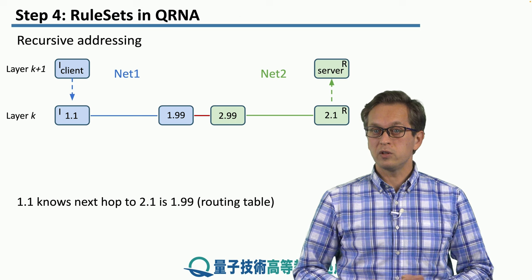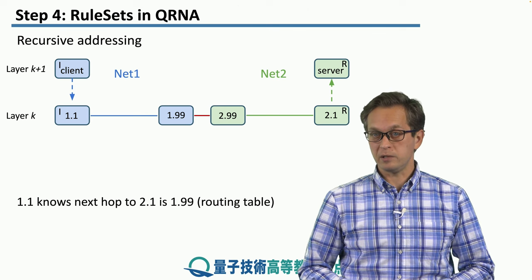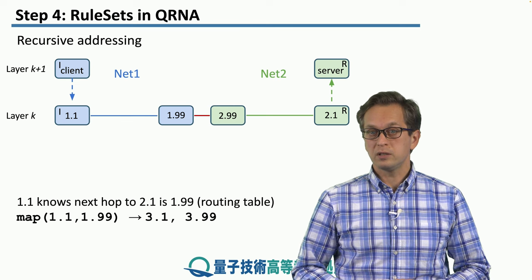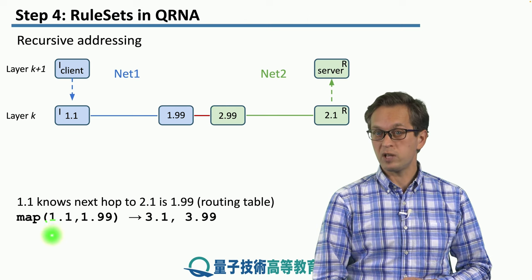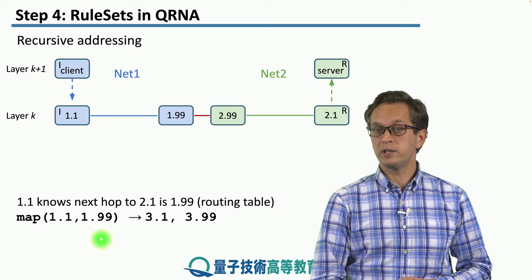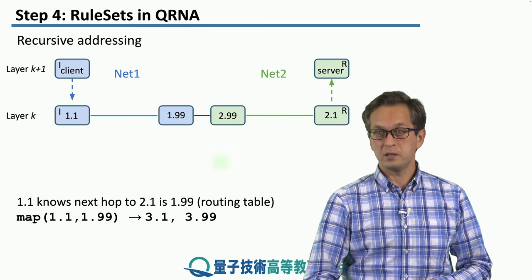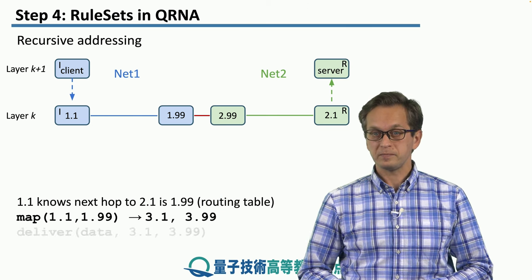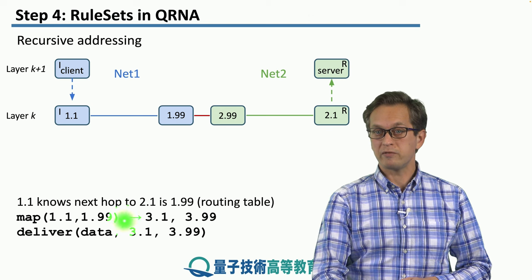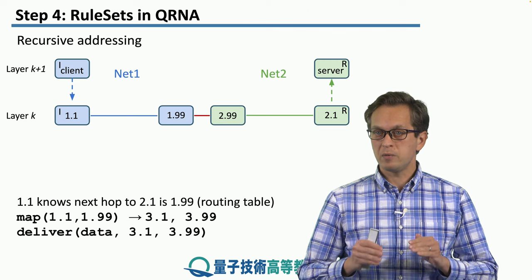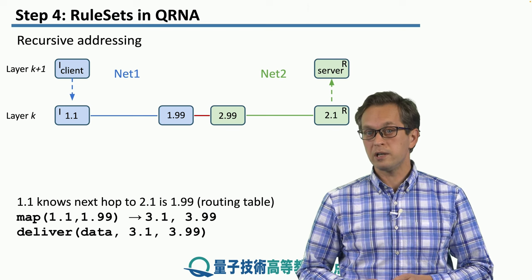Node 1.1 knows that the next hop towards 2.1 goes through router 1.99, which can be looked up in the routing tables at this layer. So node 1.1 runs the map function: the source address is 1.1 and the destination at this layer is 1.99. The map function produces a new set of initiator and responder addresses given by 3.1 and 3.99. Then we run the deliver function, which tries to pass the data from 3.1 to 3.99. If the map function fails, or if deliver also fails, then the connection fails.